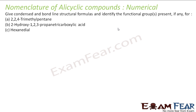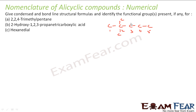Now we have to draw the condensed formula, bond-line structural formula, and identify the functional group for three compounds. Let us start with 2,2,4-trimethylpentane. We have pentane, so let us draw 5 carbons and number them 1 through 5. At the second position I have 2 methyl groups, and at the third position I have 1 methyl group.